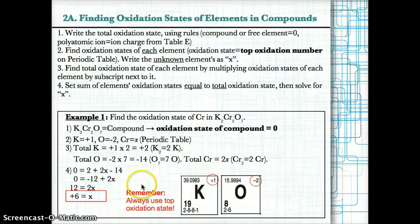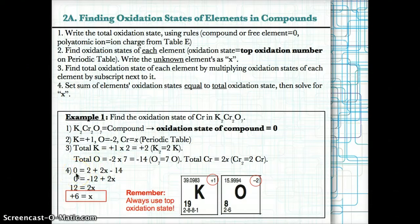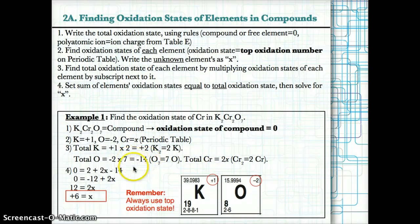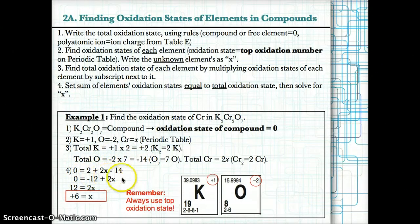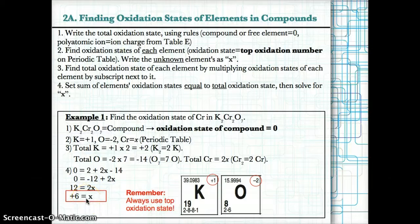In step four, we set the sum of the elements' total oxidation states equal to zero: 0 = 2 + 2X + (-14). Simplifying: 0 = -12 + 2X. Adding 12 to both sides: 2X = 12. Dividing by 2: X = +6. Therefore, the oxidation state of Cr in K2Cr2O7 is +6.